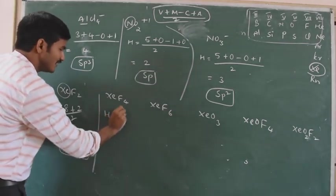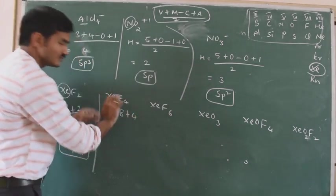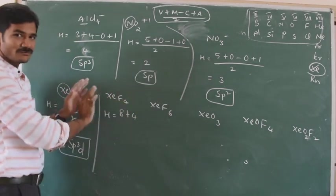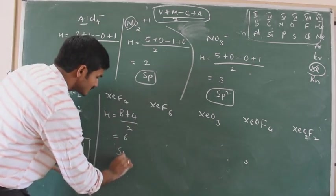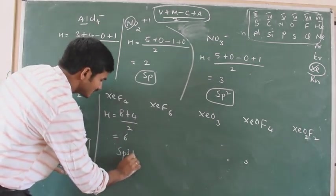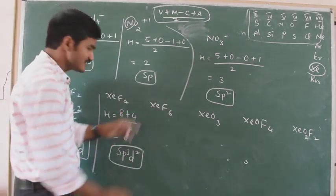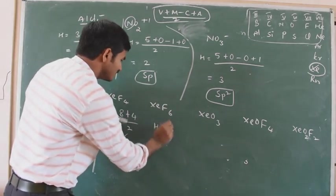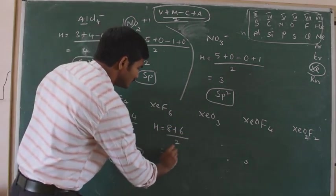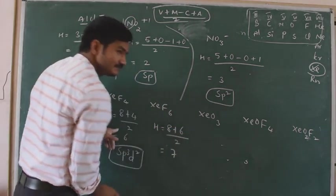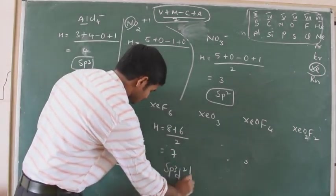For XeF4: V equals 8. Monovalent atoms — 4 fluorines. No charge. (8 + 4) / 2 = 12 / 2 = 6. Six means SP3D2 hybridization. For XeF6: (8 + 6) / 2 = 14 / 2 = 7. Seven means SP3D3 hybridization. For XeO3: central atom Xenon, group 8. No monovalent atoms — oxygen is not monovalent. No charge. (8 + 0) / 2 = 4. Four means SP3 hybridization.